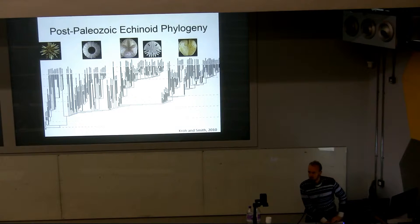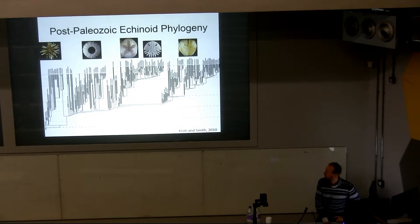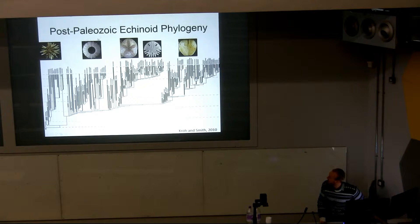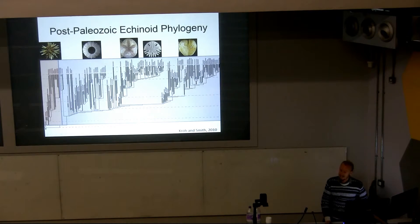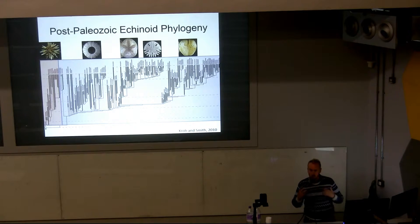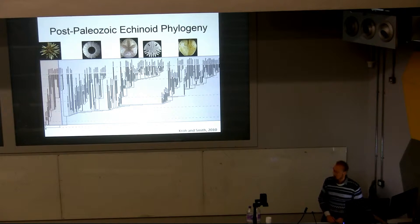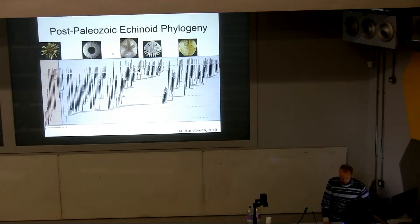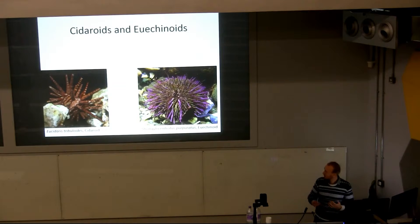Here is our post-Paleozoic echinoid phylogeny. The cidaroids are over here, and these are all euechinoids. It really shows a quite striking taxonomic and morphological disparity between the two. The euechinoids are really diverse morphologically and taxonomically, while the cidaroids are quite conserved and much less so.